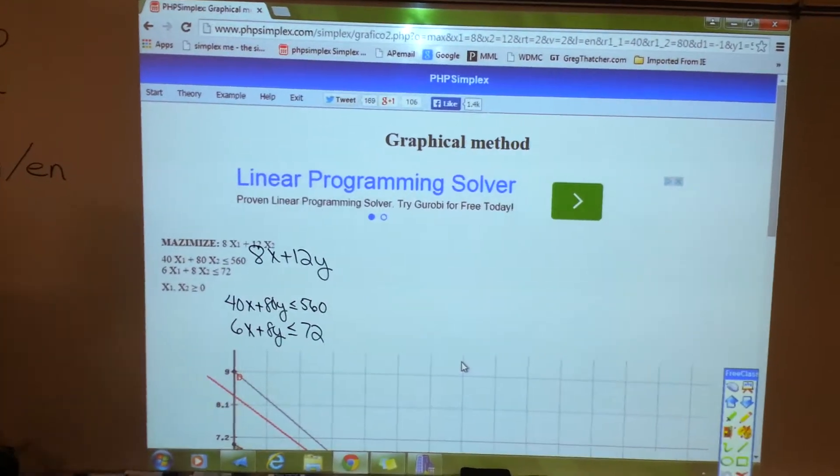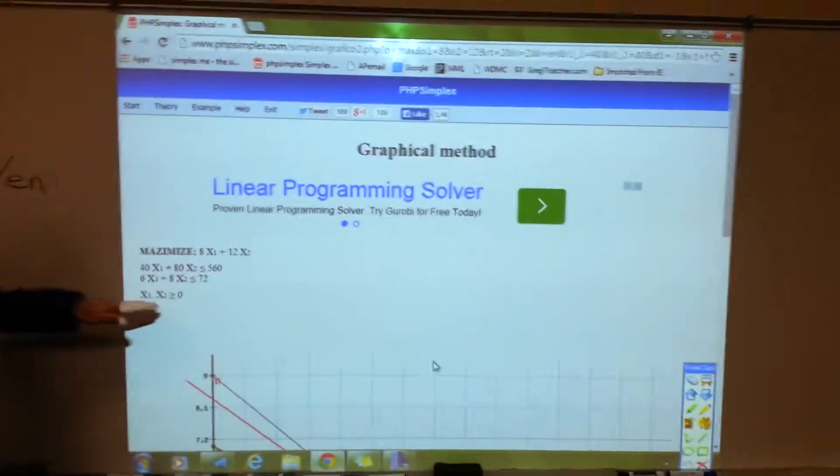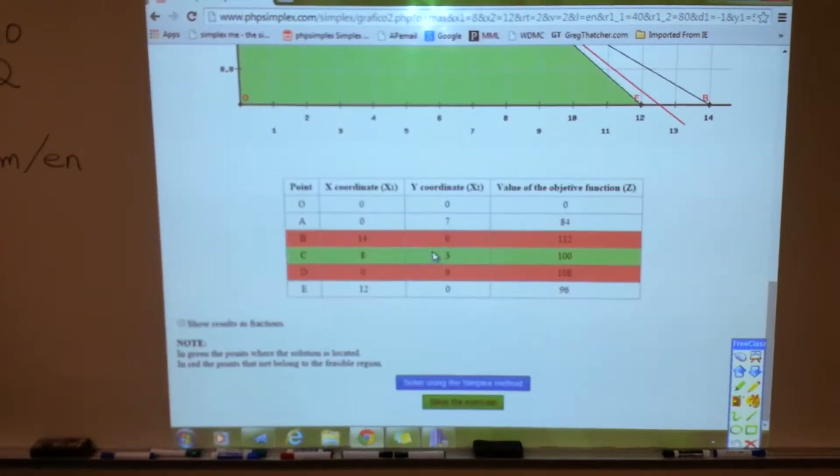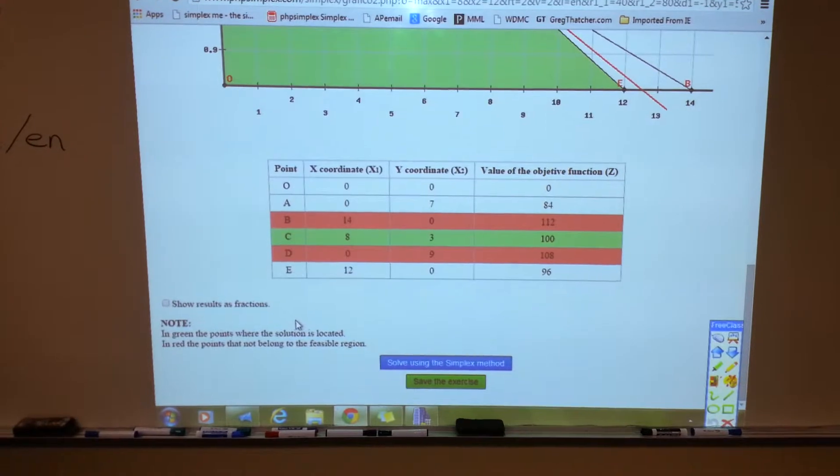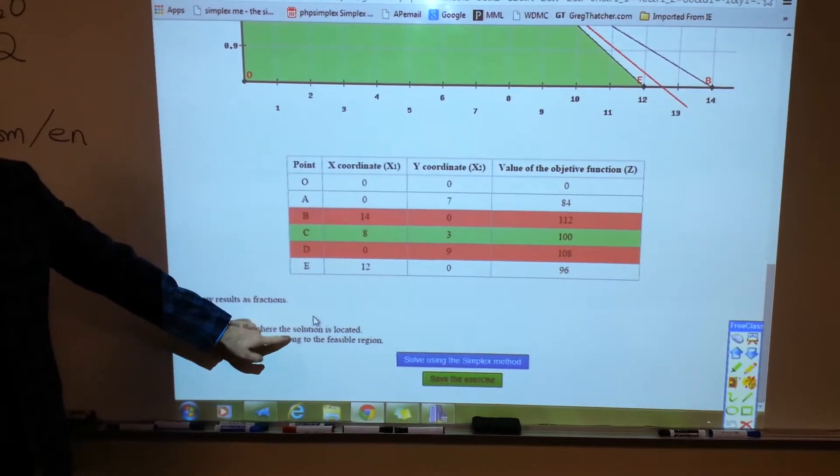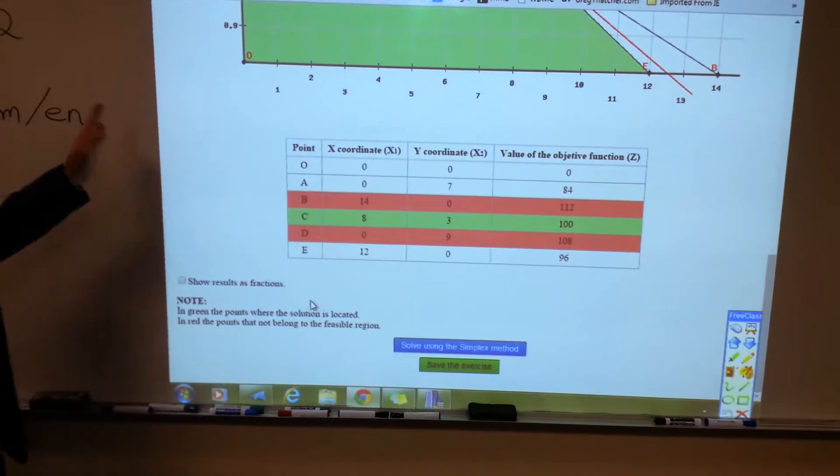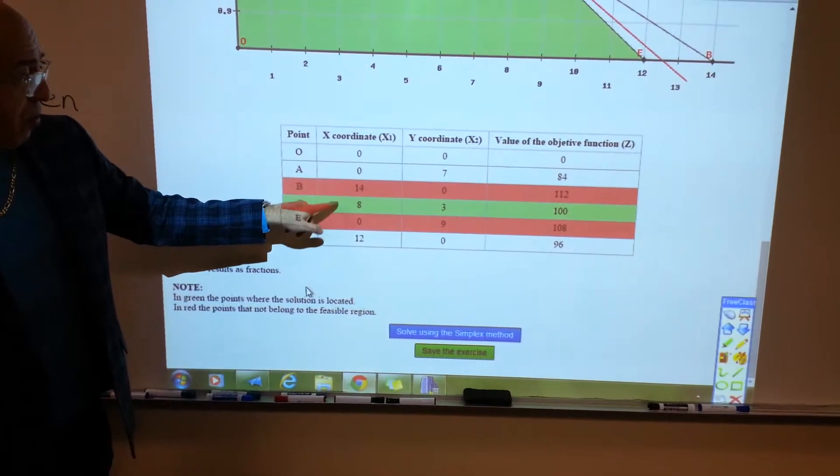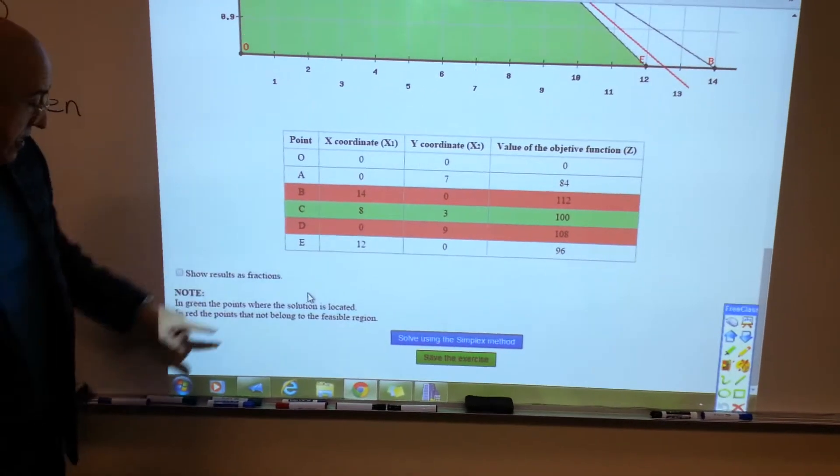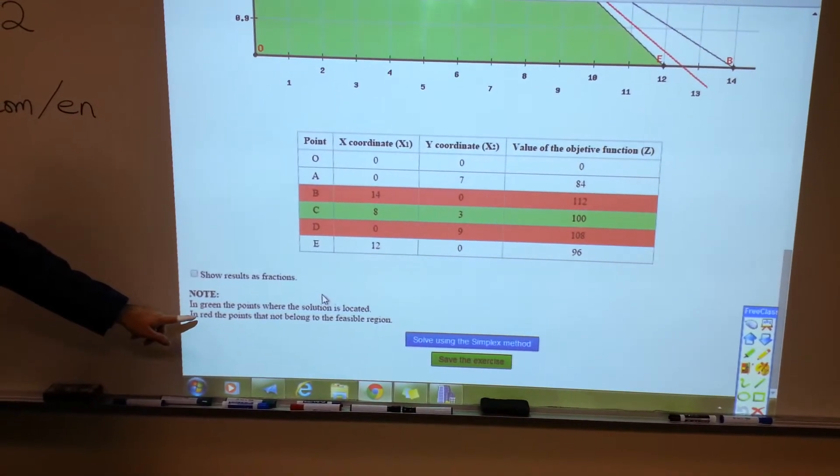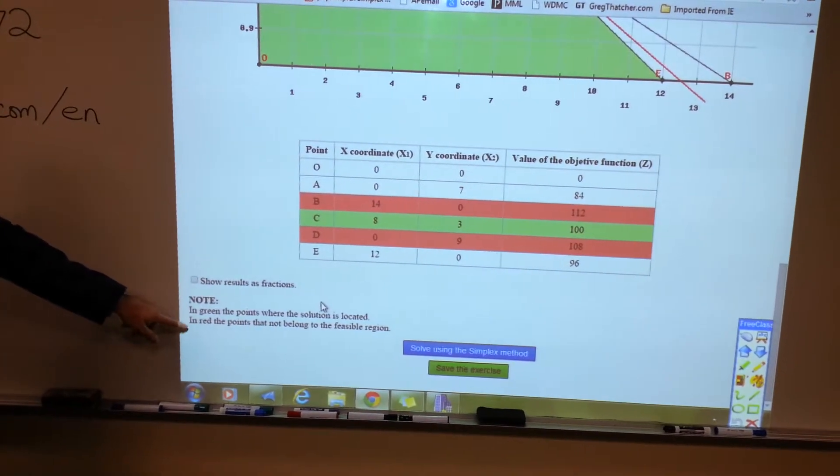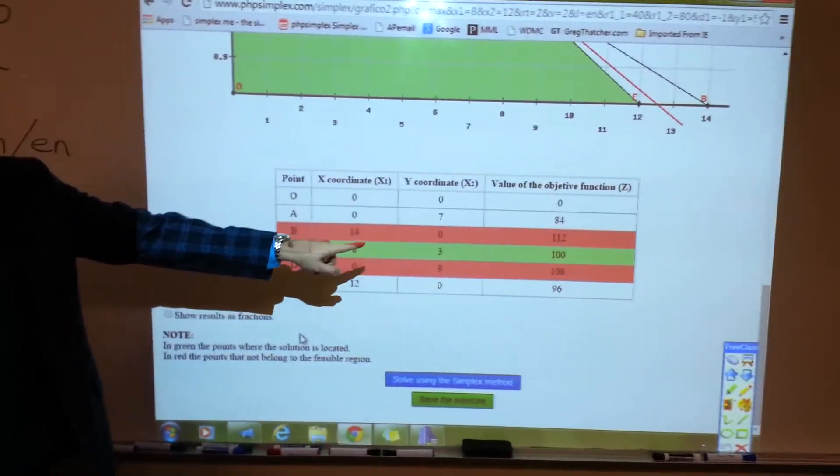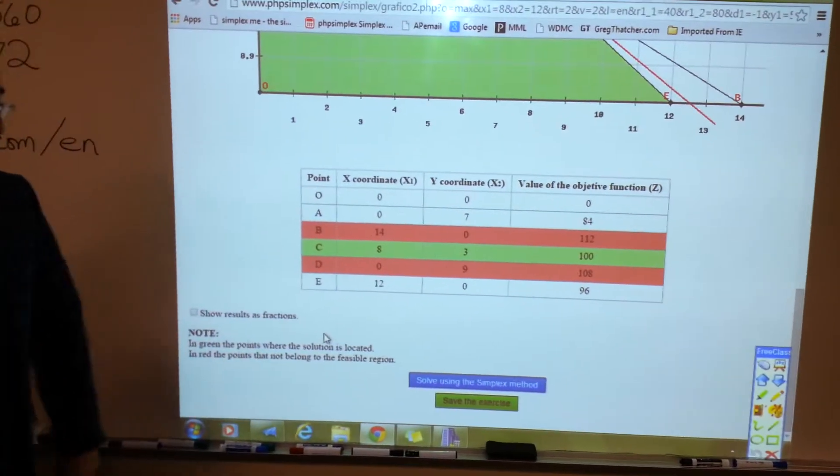Let me erase this and write out the problem. It's going to show the graph of the feasible region. And then down here in green, that's where the solution is located. So the maximum value would be 100 located at the point A3. Now, these points that are highlighted here in red, those are not in the feasible region. They're not actually corner points. Not in the feasible region. The green one is your answer. So we know the maximum value is 100 at the point A3.